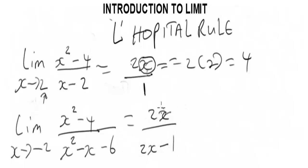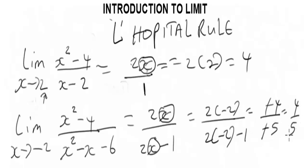So when you plug in negative 2 here and here, you're going to have 2 times negative 2 over 2 times negative 2 minus 1. So that's minus 4 over minus 5. So you can see everything. That's 4 over 5.